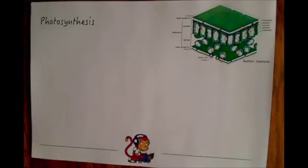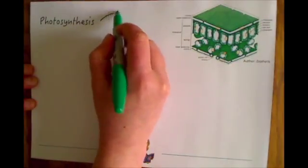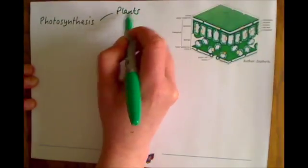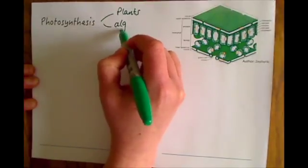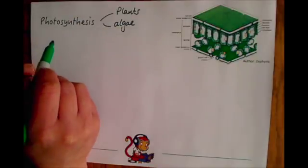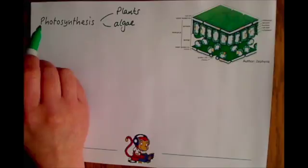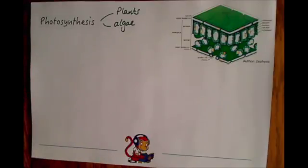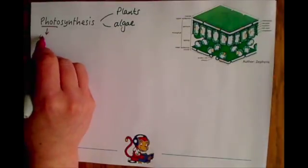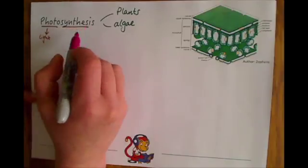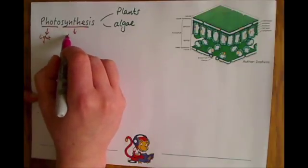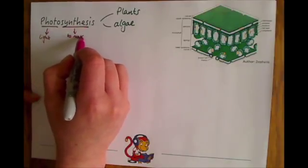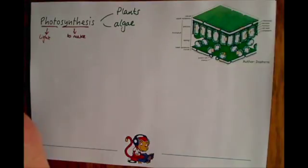Hello and welcome to this video on photosynthesis. This is a process that happens in both plants and algae. If you break down the word photosynthesis, you've got the 'photo' part which means light, and the 'synthesis' part which means to make.